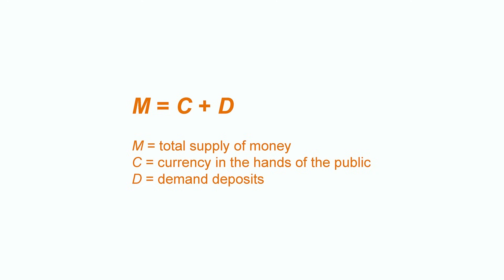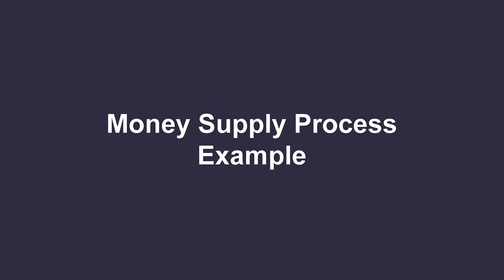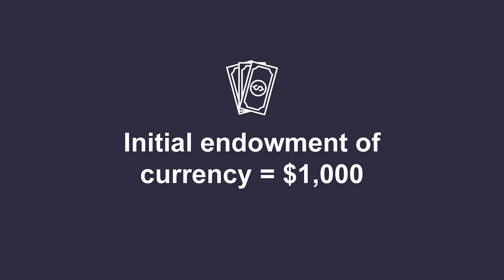Since money supply includes demand deposits, the banking system plays an important role in determining the actual money supply in the economy. In order to figure out how the money supply process works, let's imagine the central bank printed $1,000 worth of currency and all $1,000 are given out to the public and held as currency. To simplify things, suppose this is the only money in the economy. We'll consider three different cases and see what the impact on money supply is under each scenario given this initial endowment of $1,000 worth of currency.